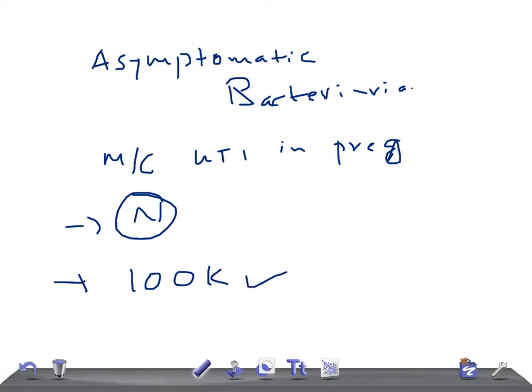How do you treat it? Single agent outpatient oral antibiotics. Remember, we give antibiotics even though the patient is asymptomatic. Why? Because to prevent acute pyelonephritis. This is really very important because if not treated, 30% of pregnant ladies can develop acute pyelonephritis.